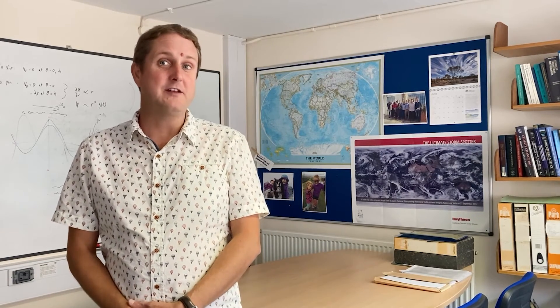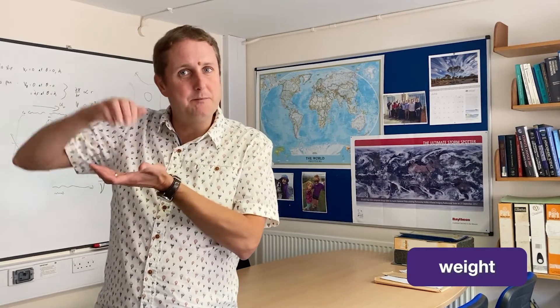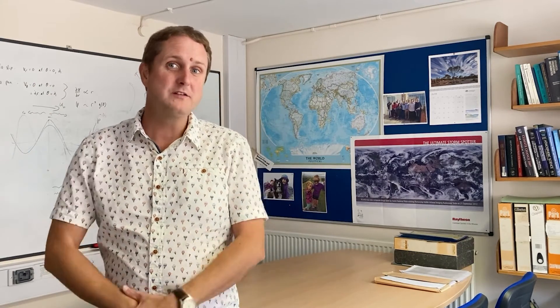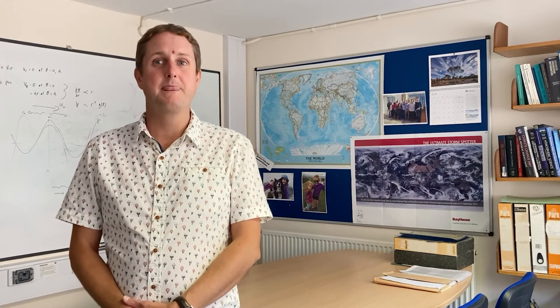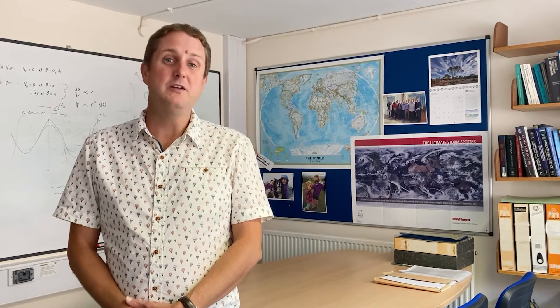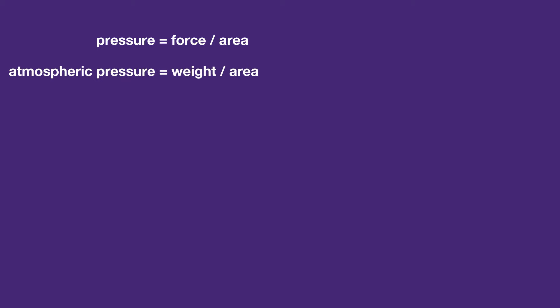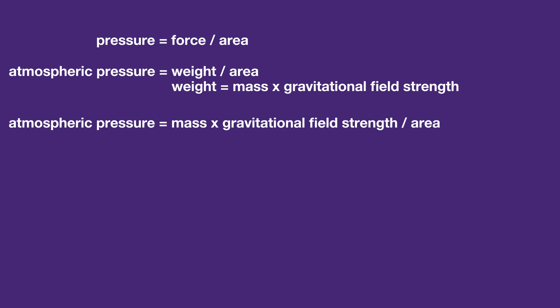Atmospheric pressure depends on the weight of the air above. Weight is a force calculated as mass multiplied by gravitational field strength. We can calculate the atmospheric pressure using some pretty simple maths. The pressure of the air on the ground is force per unit area, so atmospheric pressure equals the weight of the air divided by the area. But weight is mass of air times gravitational field strength, so the pressure is mass times gravitational field strength divided by the area.